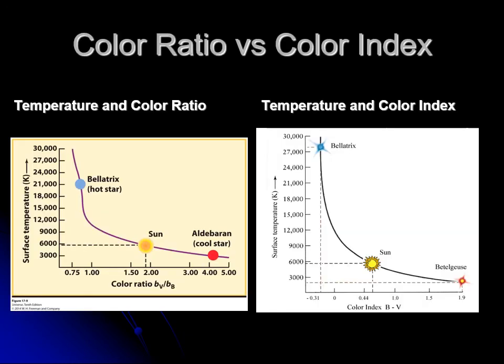And the reason I like the B minus V is with color index, you have stars, and it's a nice, smooth curve here that if you find the color index, you just go up here, go over, and you get temperature. With color ratio, you can do that for part of the curve, but for part of the curve up here, it changes so fast, the tiniest little variation here corresponds to a huge change over there. And so that's why I prefer to use the color index instead of color ratio as the dominant way of what I do in terms of studying.